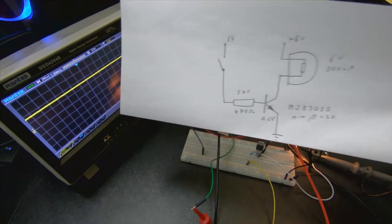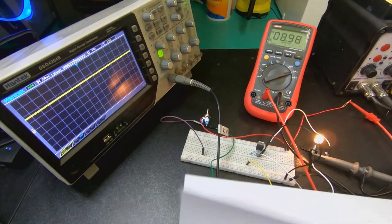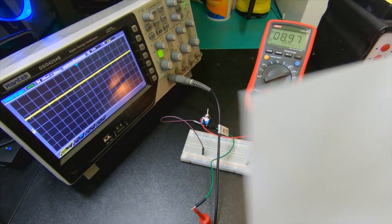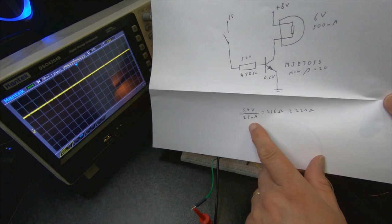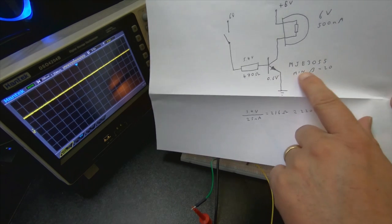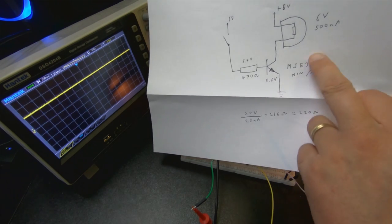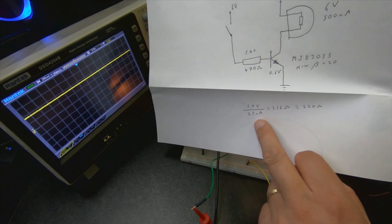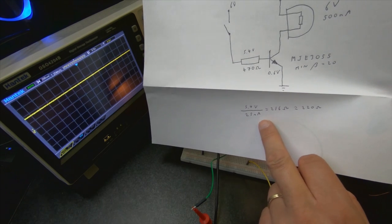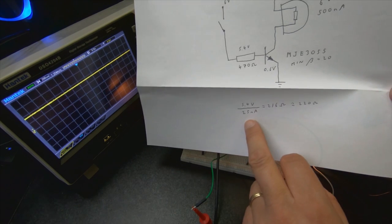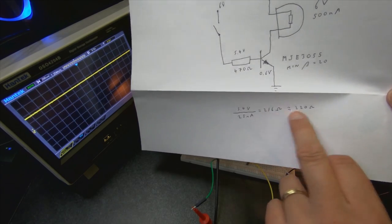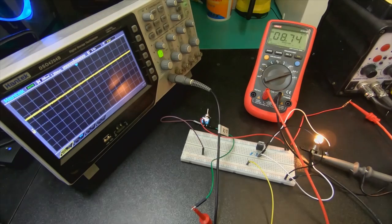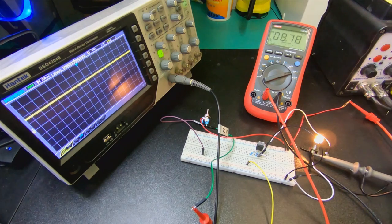So then we go back and we calculate. We want to actually have, if you take the 20 as the minimum amplification, then we want to have 25 milliamps going to the base. And that would indicate a 260 ohm resistor. So 220 would be more optimal for this case.